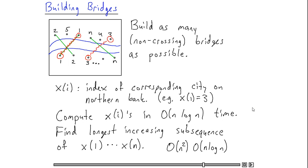And if we look at the x-coordinates of the cities on the northern bank in the ordering imposed by the cities on the southern bank, then we notice that these x-coordinates will form an increasing subsequence. So we have a one-to-one correspondence between increasing subsequences of this x-array and feasible solutions to our problem. And moreover, the longest-increasing subsequence of the x-array will correspond to the maximum number of bridges that I can build.